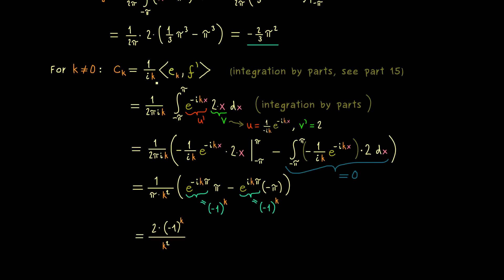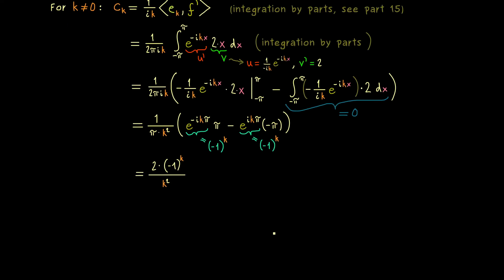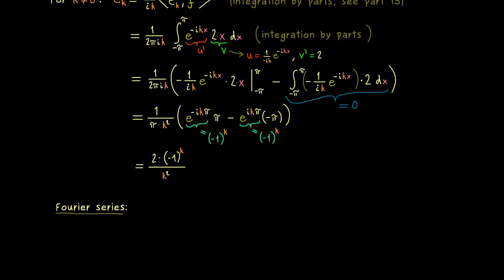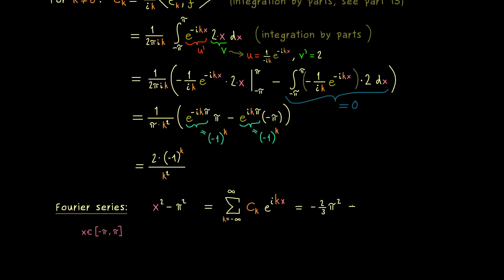We now have all the coefficients and can form the whole Fourier series, which we already know converges uniformly — and in particular pointwise. Inside our interval -π to π, the parabola equals the Fourier series, which is the infinite sum of c_k times e_k. Substituting c_0 separately and all other c_k's, we apply Euler's formula: the exponential function can be written as cosine plus i·sine.